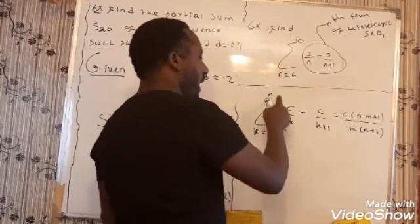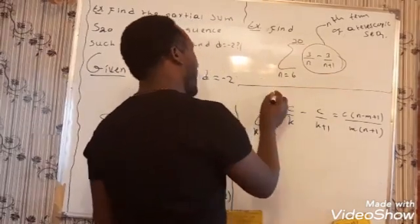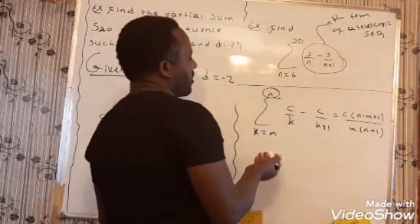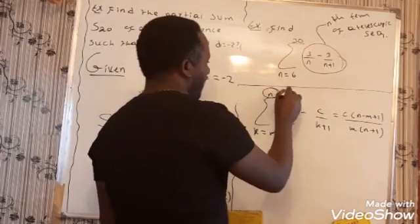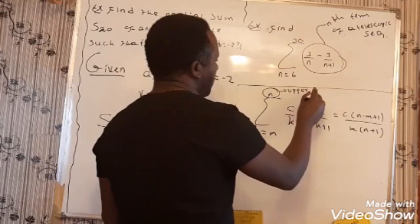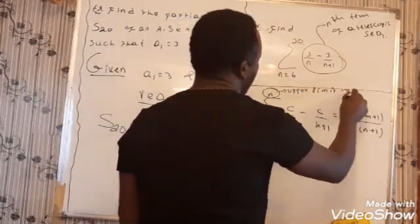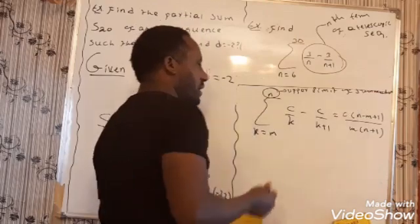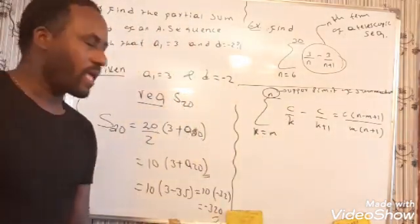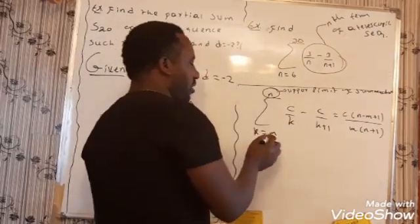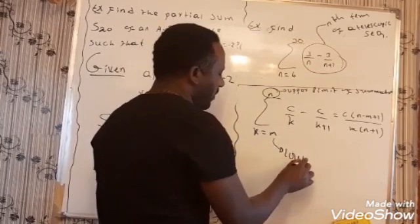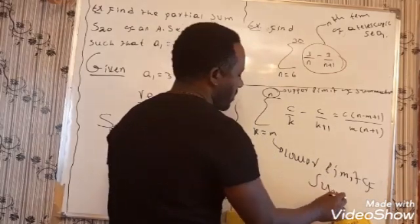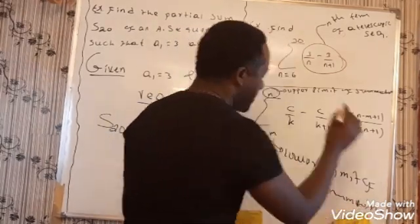In this formula: n is the upper limit of summation, m is the lower limit of summation, and C is the constant — the numerator in the telescopic terms. So identifying each component: the upper limit n, the lower limit m, and the constant C allows us to apply the formula directly.